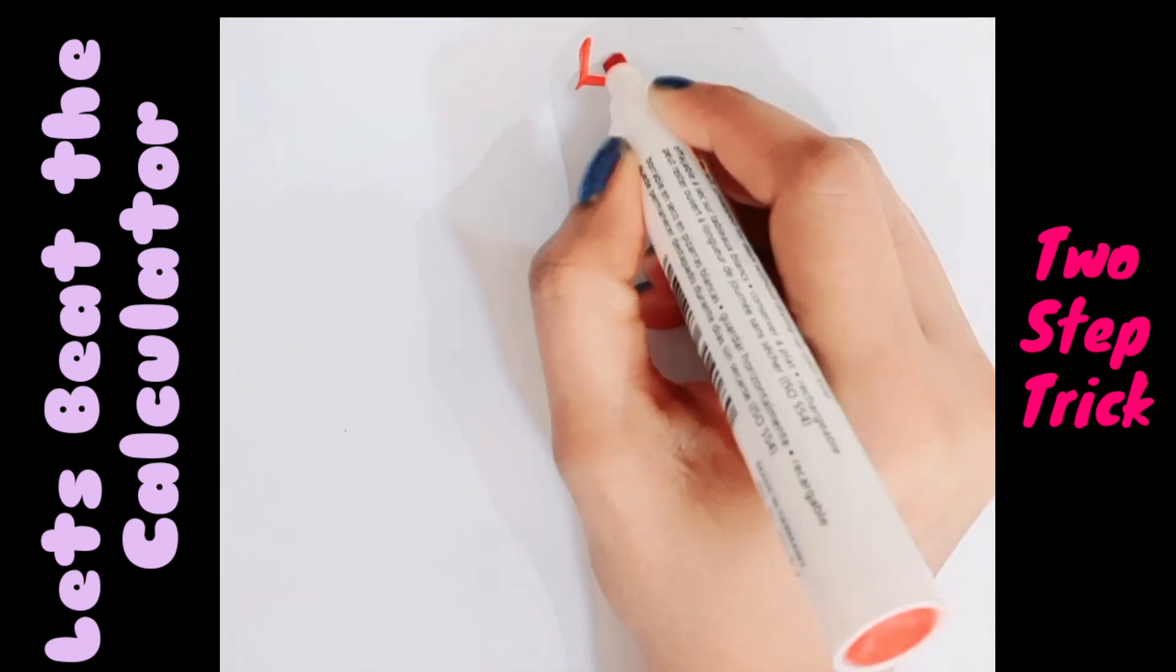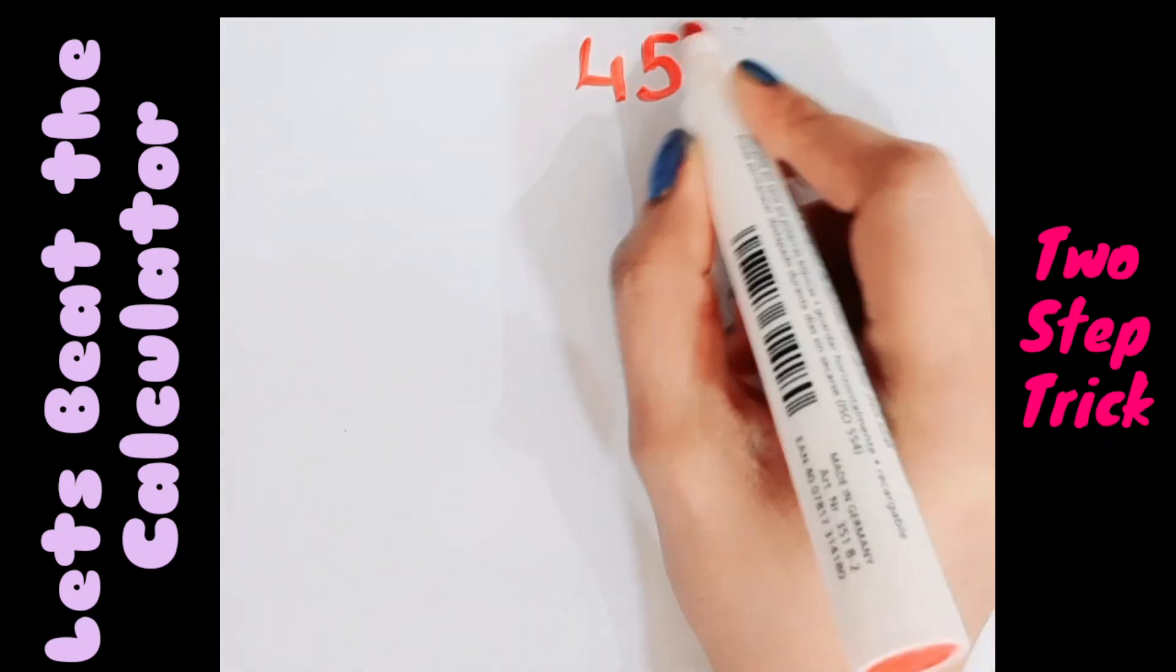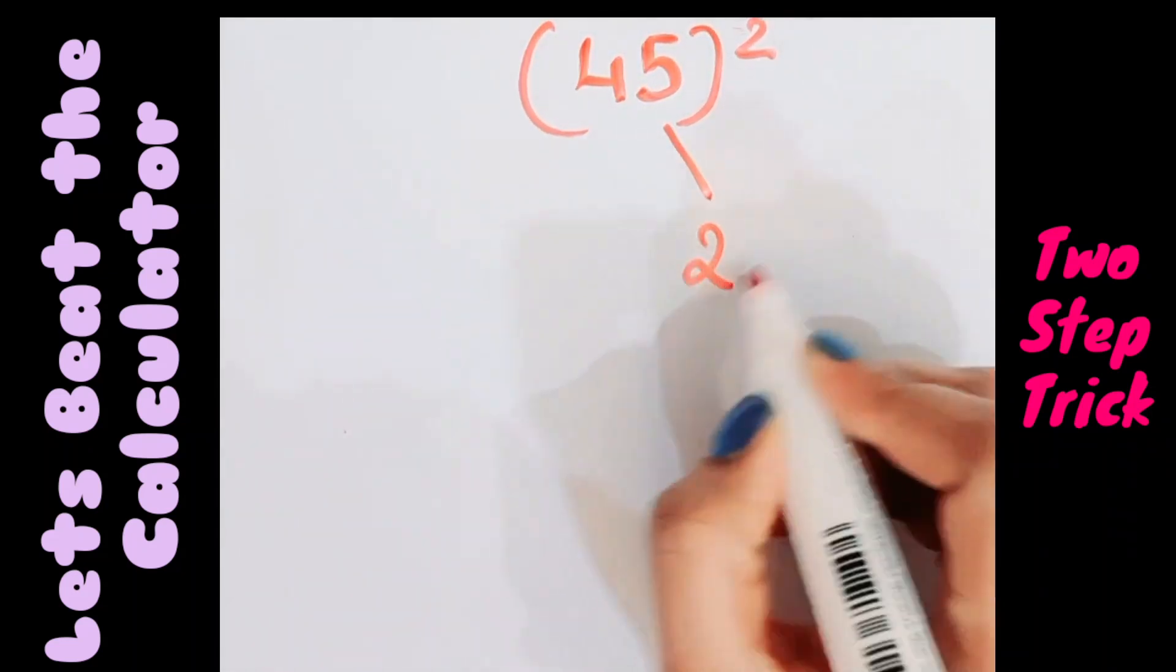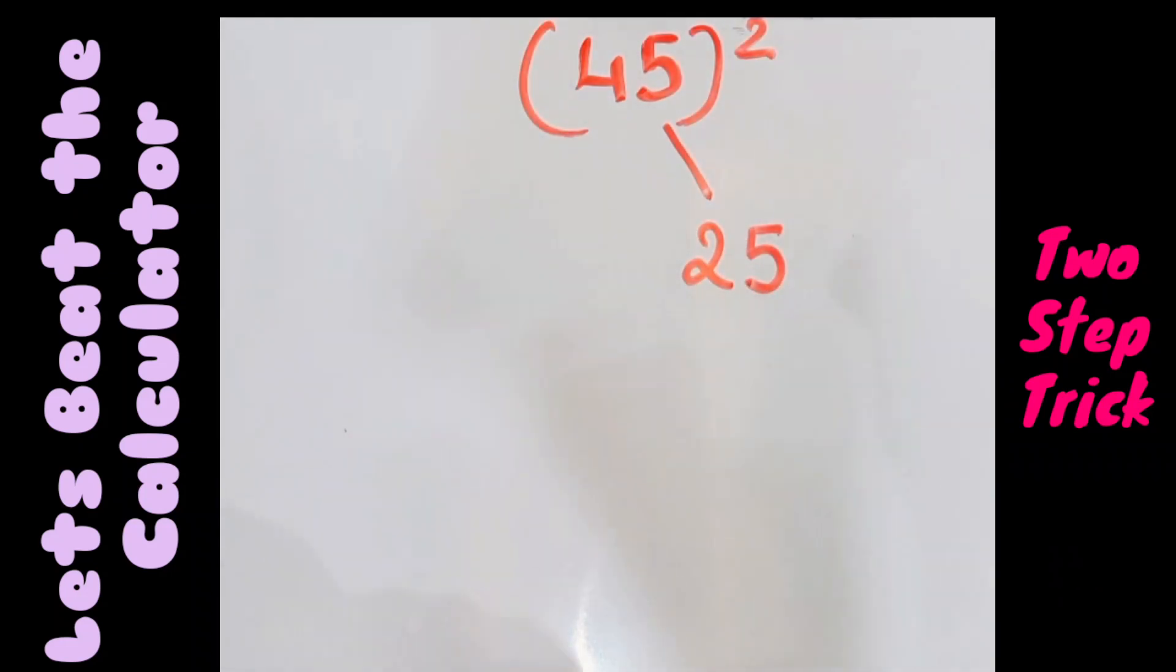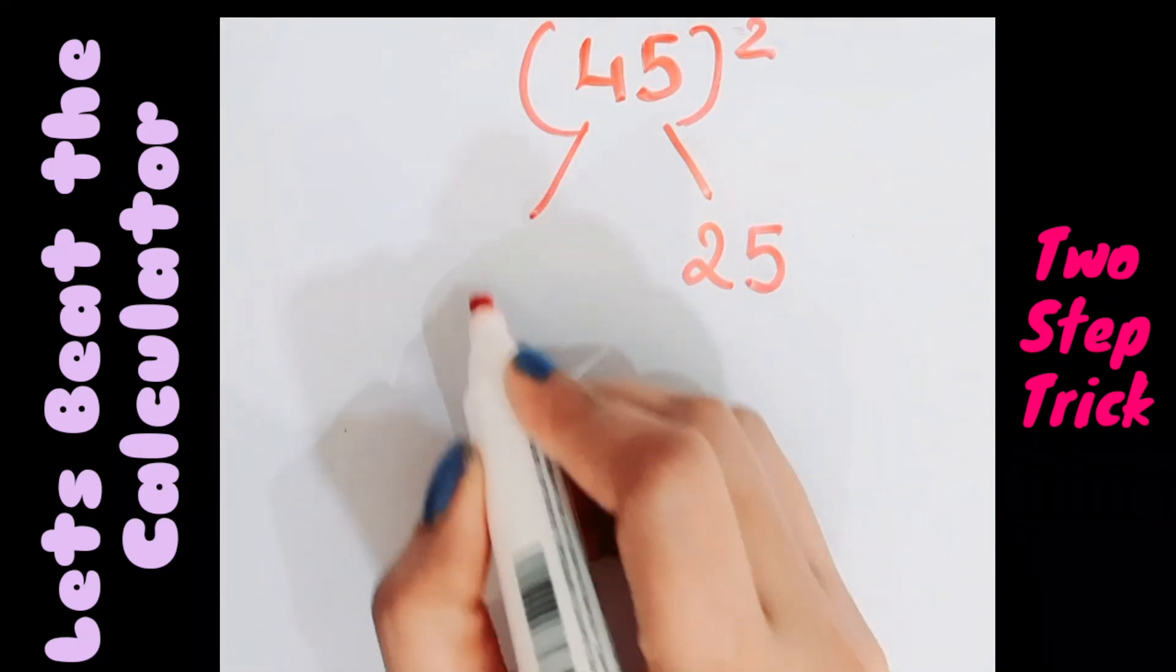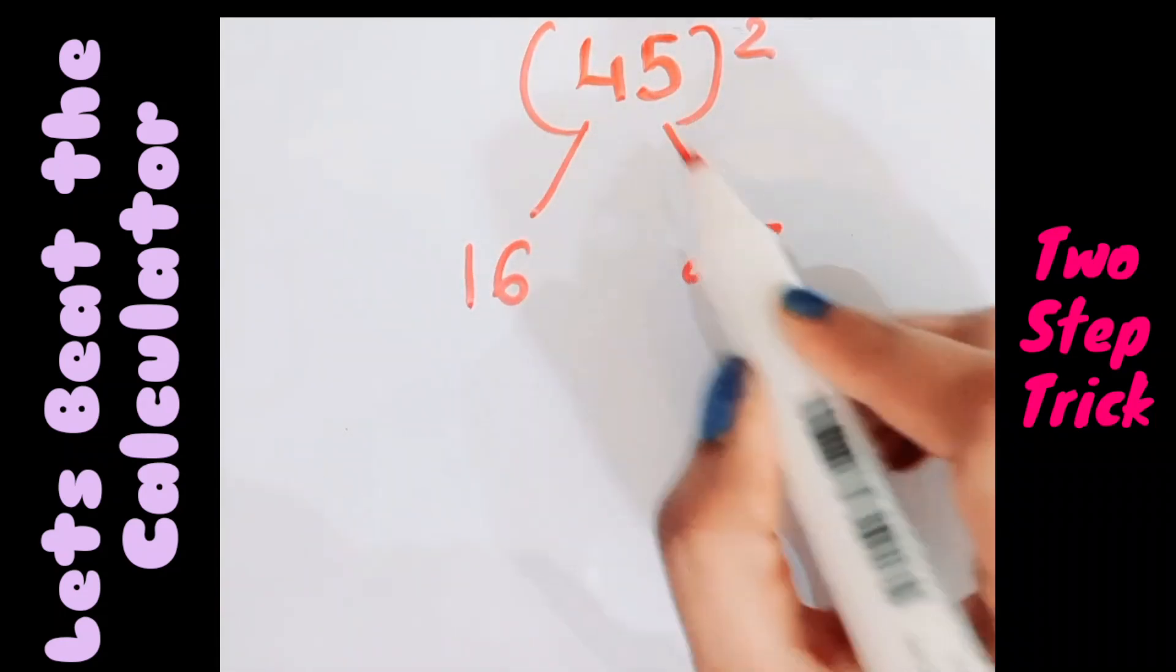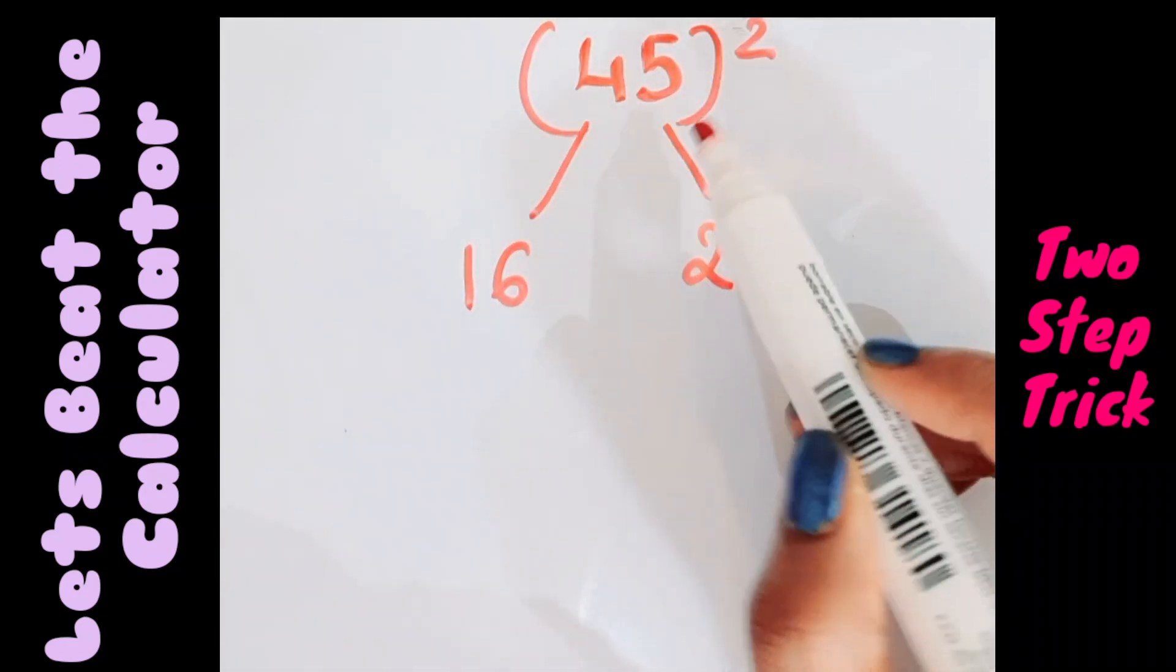Let's move on to the next question. In case the question is 45, so 45 square, how do we find? Yes, same method. 5 square is 25, I already have two-digit numbers so write it as is. 4 square is 16, so I'll write it like this.